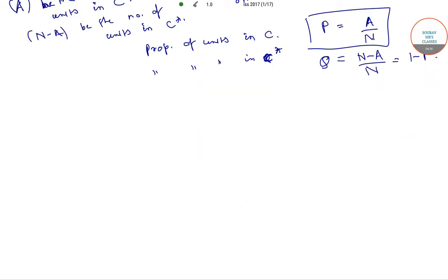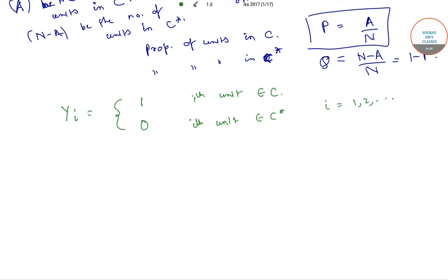Now let us define an indicator variable yi, where yi equals 1 if the ith unit belongs to C, and yi equals 0 if the ith unit belongs to C star, where i runs from 1 to capital N.